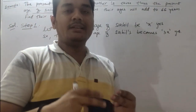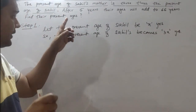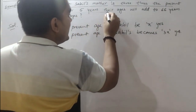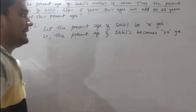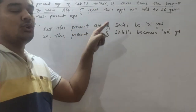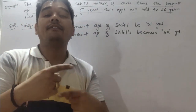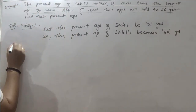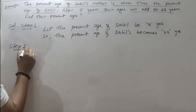This is the first step. Now what is the second step? Looking at what else is given: after 5 years, their ages will add up to 66. The second step is to find their ages after 5 years.